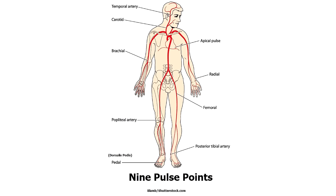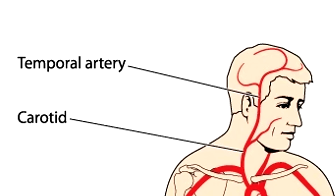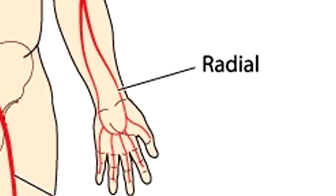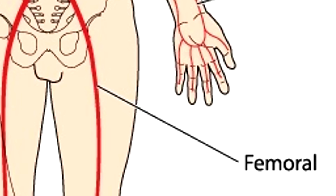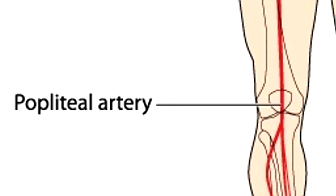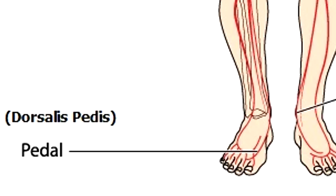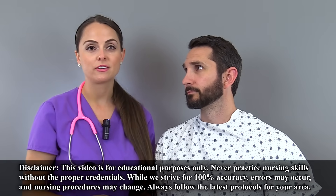The nine pulse points we will be assessing in this video will be the temporal, the carotid, apical, brachial, radial, femoral, popliteal, posterior tibial, and dorsalis pedis. To find the pulse points, we're going to start from the head and work our way down — it just makes it easier going in that order. You can use your first two or first three fingers.